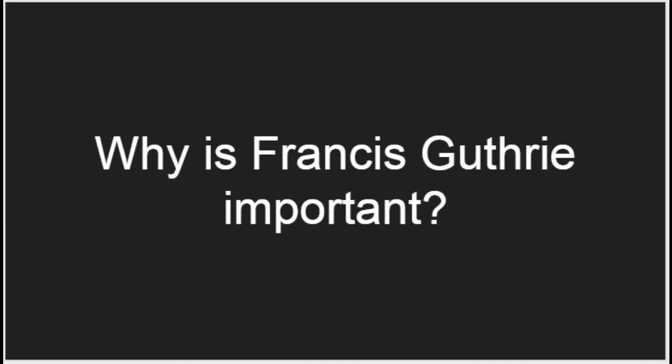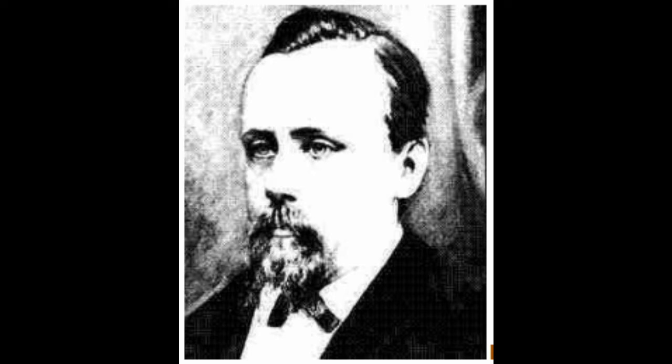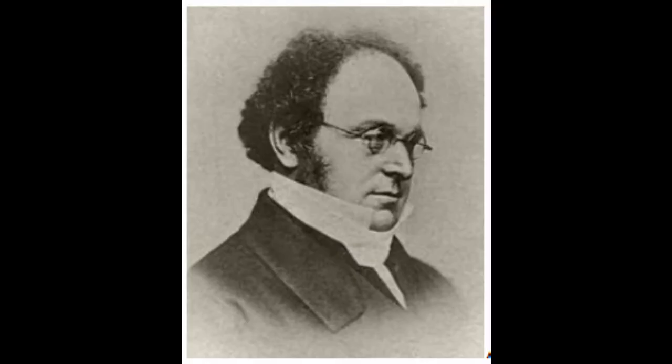Why is Francis Guthrie important? Guthrie was born in 1831 and died in 1899. While he was a student at University College London, he studied under De Morgan. He obtained his mathematics and law bachelor degrees in 1850 and 1852 from University College London as well. When Guthrie couldn't think of a proof, he would take it to De Morgan, who would then give it to other people as well.